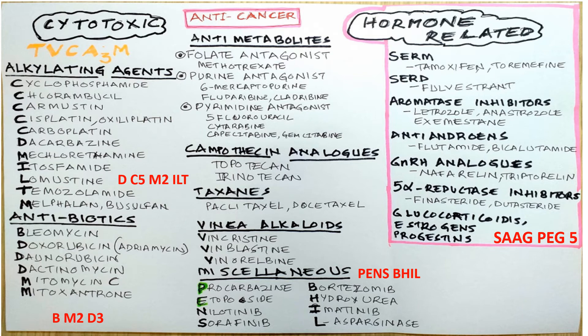Among the antiandrogens we have flutamide and bicalutamide. GNRH analogues include nafarelin and triptorelin. Among the 5-alpha reductase inhibitors we have finasteride and dutasteride. In this group we also have glucocorticoids, estrogens, and progestins.